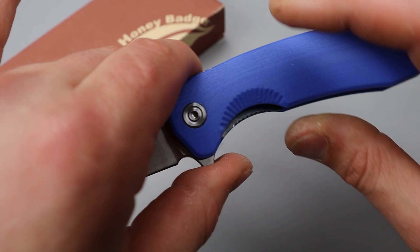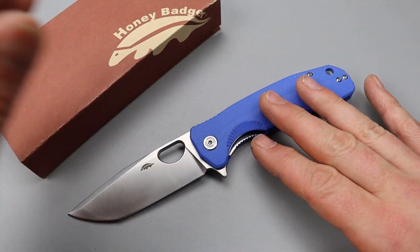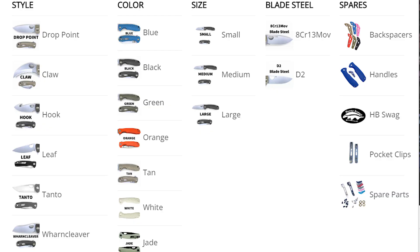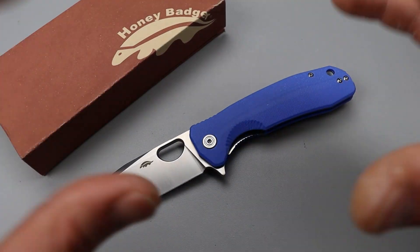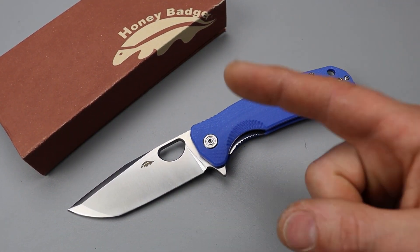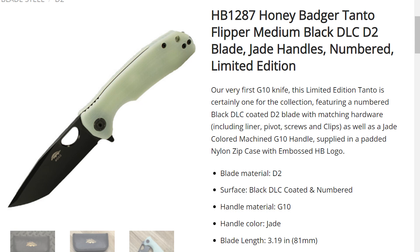But the G10 scales and the new Tonto version. The G10 scales come, they have eight different colors and they do sell the scales separately. So if you already have a model you can just buy whatever color G10 scales you want for your Honey Badger.